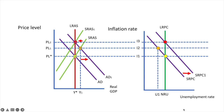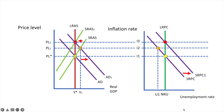The short-run Phillips Curve shift also helps us understand the impact of stagflation. As short-run aggregate supply shifts leftward and decreases, it leads to higher prices and higher unemployment. We see this in the shift of SRPC to SRPC1 and the corresponding increase in the inflation rate from I2 to I3 alongside the increase in unemployment from U1 to the natural rate.